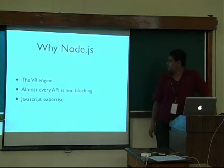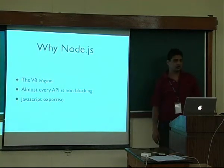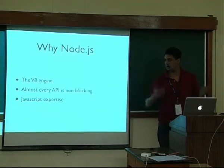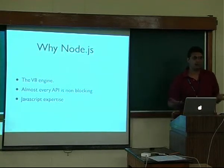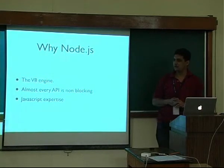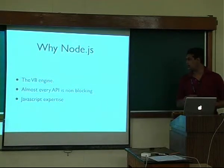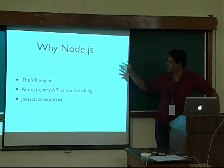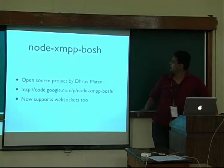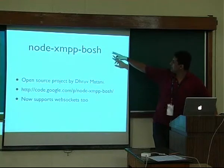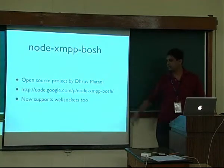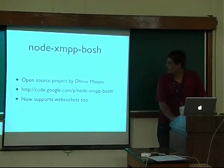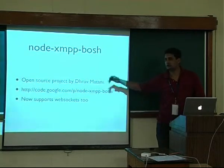There were a couple of concerns we had to deal with. One is, is Node.js immature? Would we not be able to find what we were looking for? Would we have to build everything from scratch? Was it unproven? Anyway, we went ahead and built node-xmpp-bosh. This was an open source project by Dhruv Mittani, who is a former colleague of mine, and it's hosted here, so you can always download it and contribute.